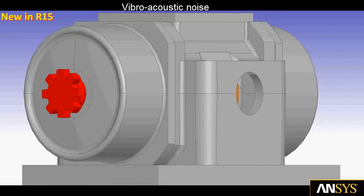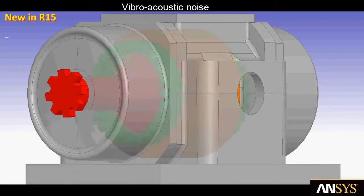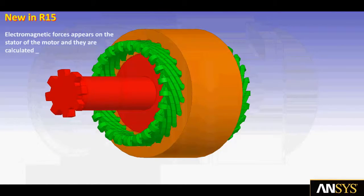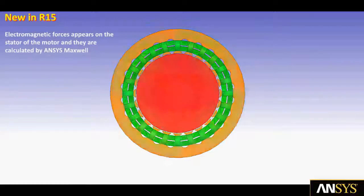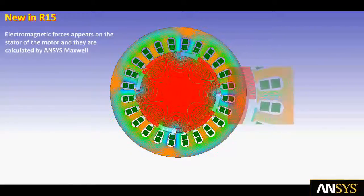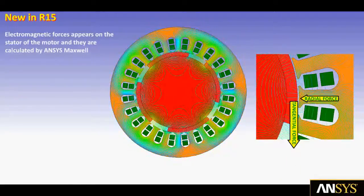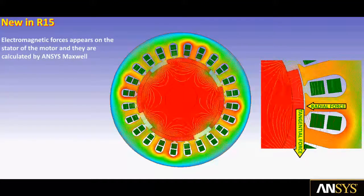The final analysis we will demonstrate is vibro-acoustic noise of the electric motor. Electromagnetic forces on the motor stator are computed by Maxwell. The result is a collection of radial and tangential forces that can deflect the stator and cause harmonic motion that induces the acoustic noise.